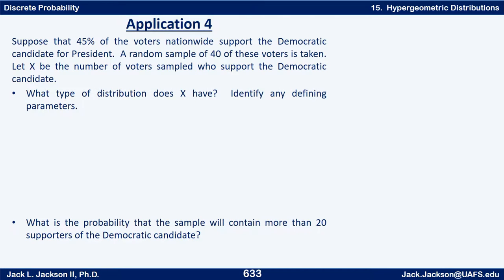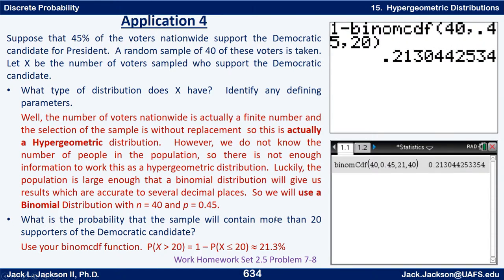Suppose that 45 percent of voters nationwide support the Democratic candidate for president. A random sample of 40 of these voters is taken. Let X be the number of voters sampled who support the Democratic candidate. What type of distribution does X have, and what is the probability the sample will contain more than 20 supporters? Technically this is hypergeometric, but the population is huge and unknown, and a sample of 40 is tiny compared to the total number of voters, so we'll treat this as a binomial distribution with n=40 and p=0.45.